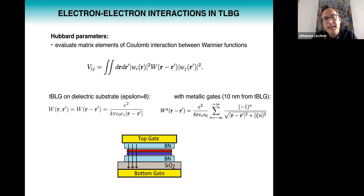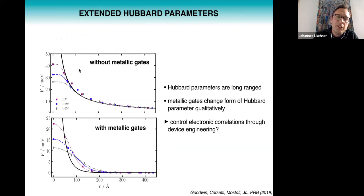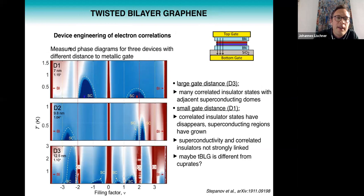So we calculated the distance dependent Hubbard parameters for these two interactions. When we don't include the metallic gates we get these quite long-ranged slowly decaying Hubbard parameters. When we include the metallic gates we get something that's both quantitatively and qualitatively quite different, which tells you that these gates can be quite important. It also raises the intriguing possibility that you can control electronic correlations in this material through device engineering.